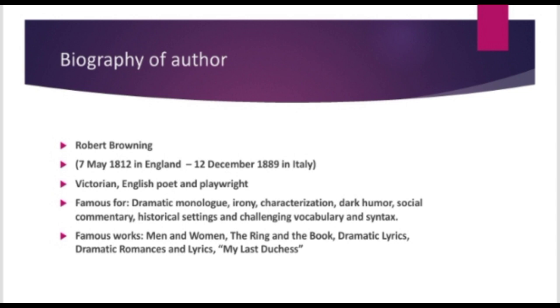Robert Browning was born on 7 May 1812 in England and died on 12 December 1889 in Italy. He was a Victorian English poet and playwright. He was very famous for dramatic monologue, irony, characterization, dark humor, social commentary, historical settings, and challenging vocabulary with syntax.